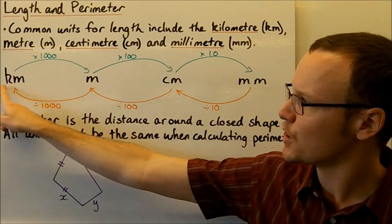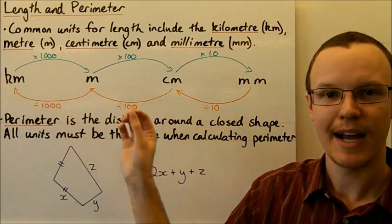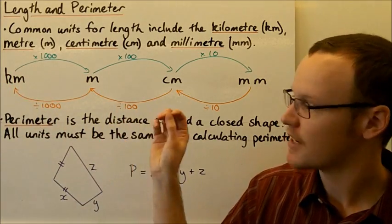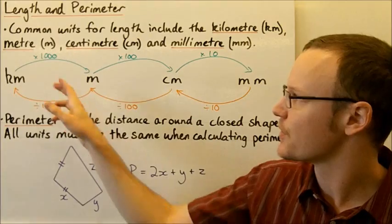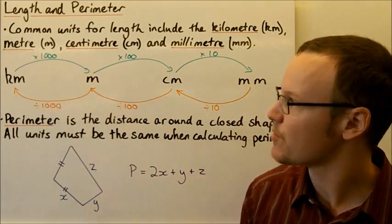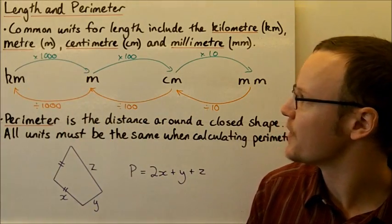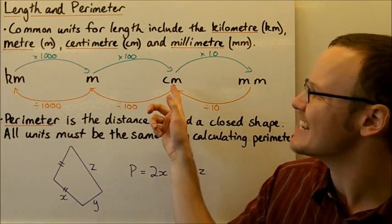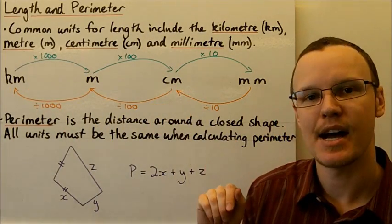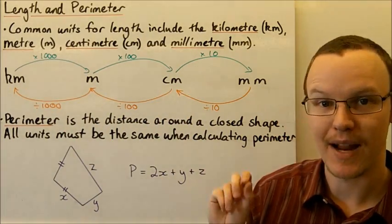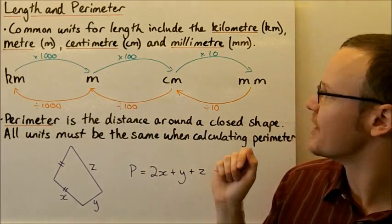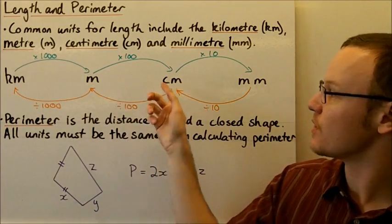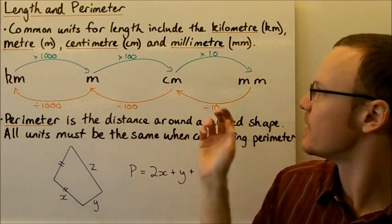The word kilo actually means a thousand — it's Latin for a thousand — so that's why we multiply by a thousand. Centi is Latin for a hundredth, so we've got a hundred there, and dividing by a hundred.